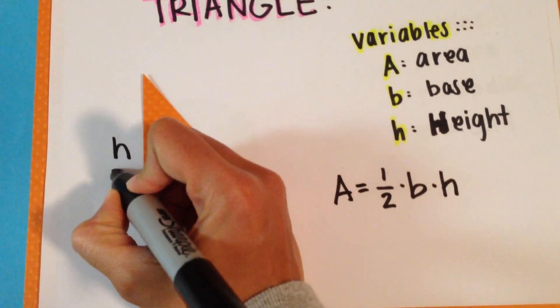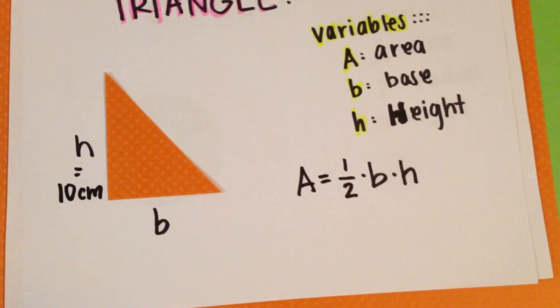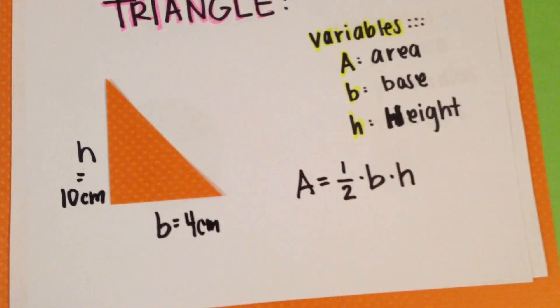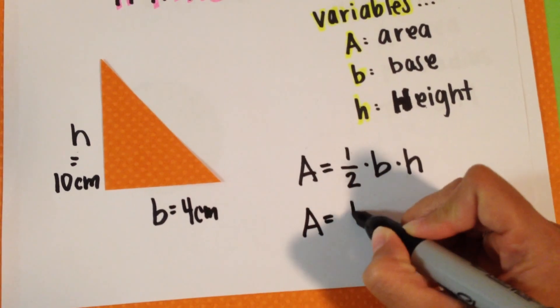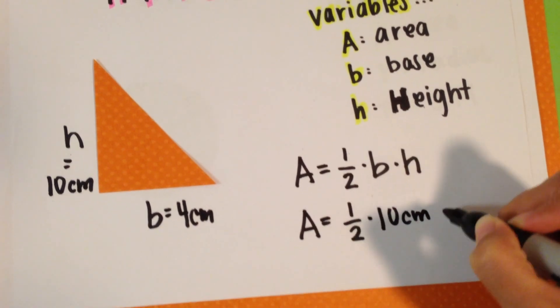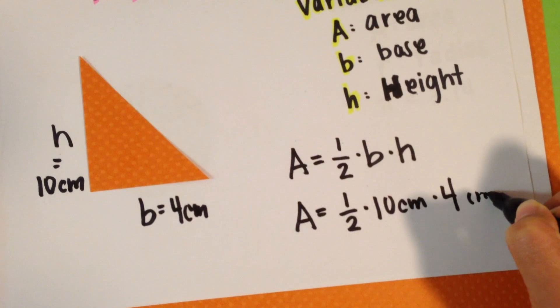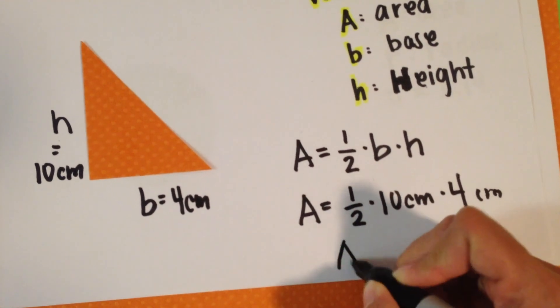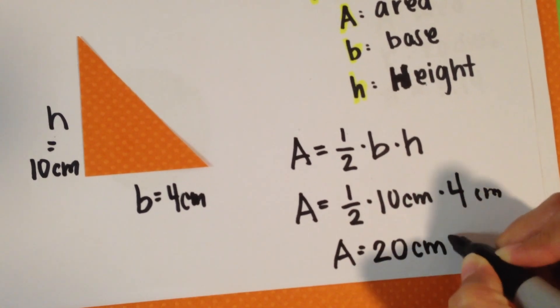Say we had a height of 10 centimeters and a base of 4 centimeters. Our area would be 1 half times 10 centimeters times 4 centimeters, giving us a total area of A equals 20 centimeters squared.